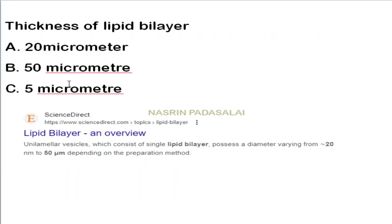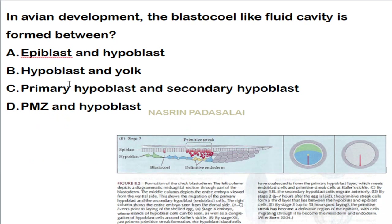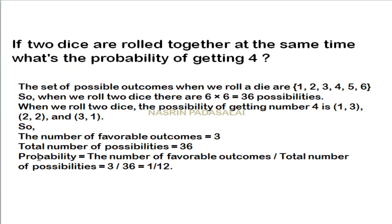The thickness of the lipid bilayer ranges from 20 to 50 angstroms, depending on location, cell type, and preparation type. Regarding gastrulation, the blastocoel is present between the epiblast and hypoblast.